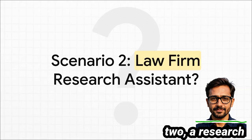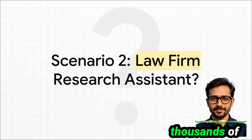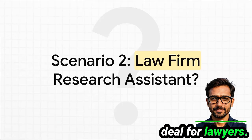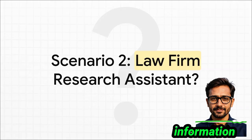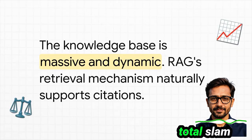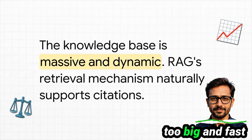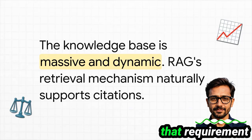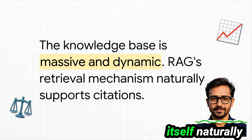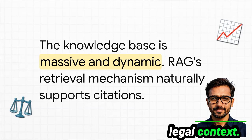Scenario number two: a research assistant for a law firm. This tool needs to search through thousands of legal cases that are being updated all the time, and it needs to provide precise citations for where the information came from. RAG or CAG? This is a total slam dunk for RAG. The knowledge base is massive and super dynamic — way too big and fast-changing for CAG to handle. Plus, that requirement for citations? RAG handles that beautifully. The retrieval step itself naturally tells you the source of the information, which is absolutely essential in a legal context.